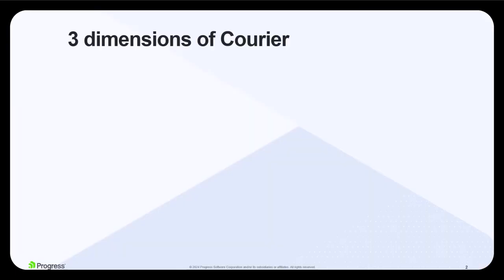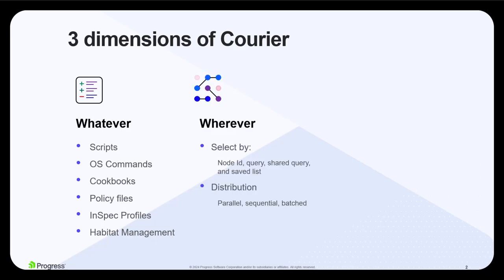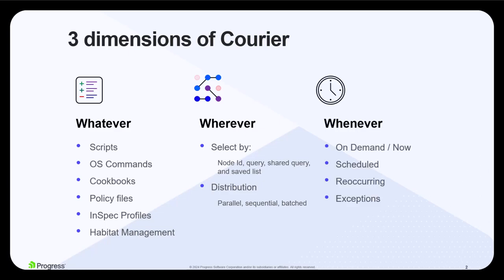The three fundamental dimensions Chef Courier are built upon are the whatever, which defines the actions that are required to complete a task; the wherever, which defines where and how jobs should be run with the ability to control the distribution and blast radius; and the whenever, providing the advanced scheduling of jobs.